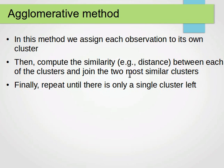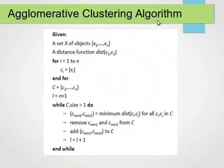We keep repeating until we end up with only one cluster. Looking at the algorithm: given a set of objects x1 to xn and a distance function between cluster 1 and cluster 2 for all values in set x, we give each object its own cluster — ci equals xi. The set of clusters C now has n clusters, the same number as the points.